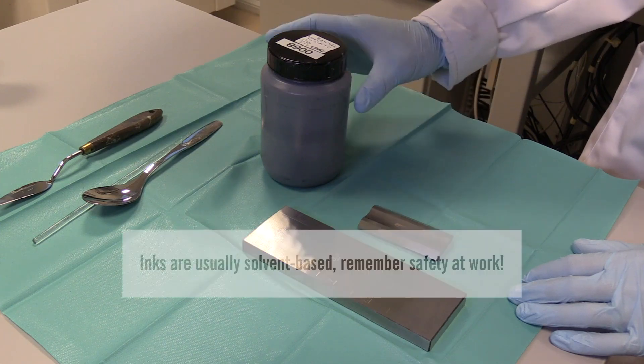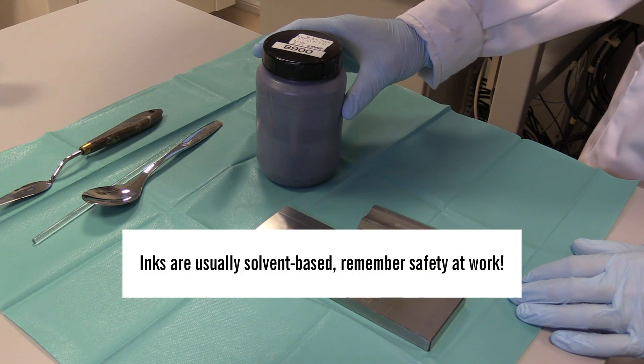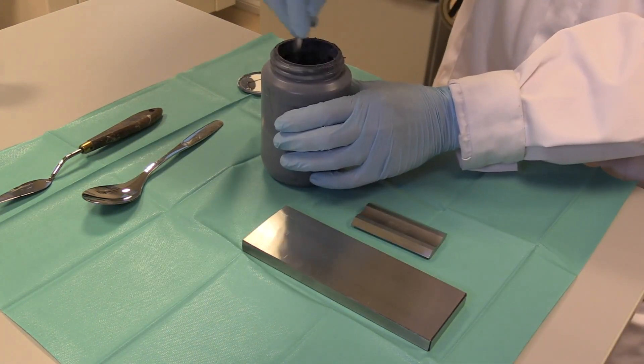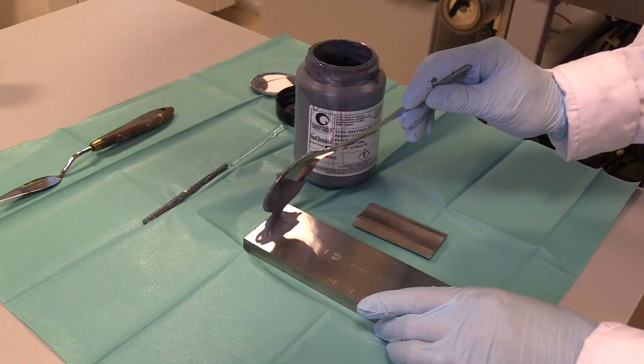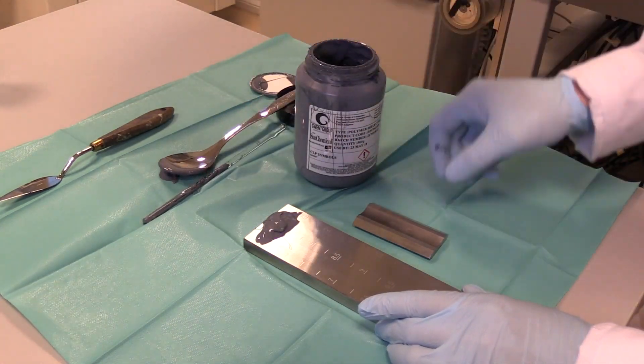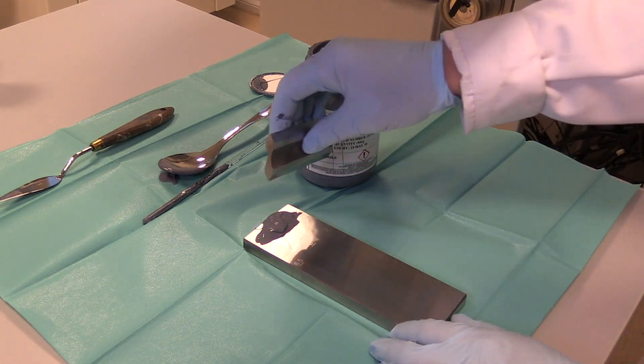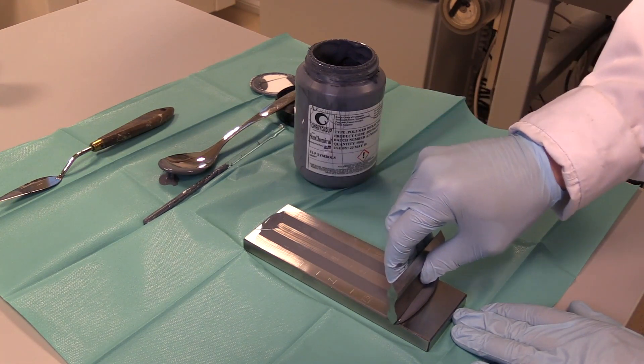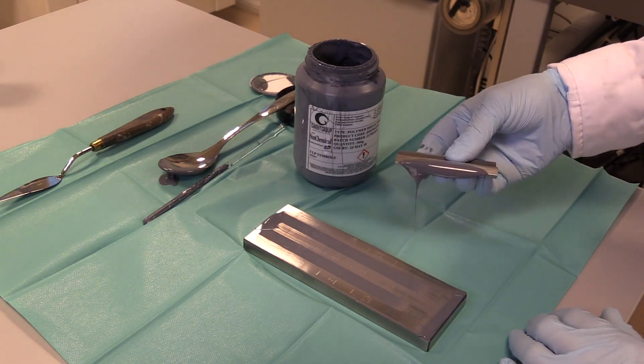Seuraavaksi valmistellaan muste painoon ja tarkistetaan sen laatu grindometrillä. Muste tulee sekoittaa huolellisesti. Grindometrillä tarkastetaan musteen laatua, sillä nähdään kuinka isoja partikkeleita musteen sisässä on ja onko sinne kuivunut sellaisia isompia kokkareita.